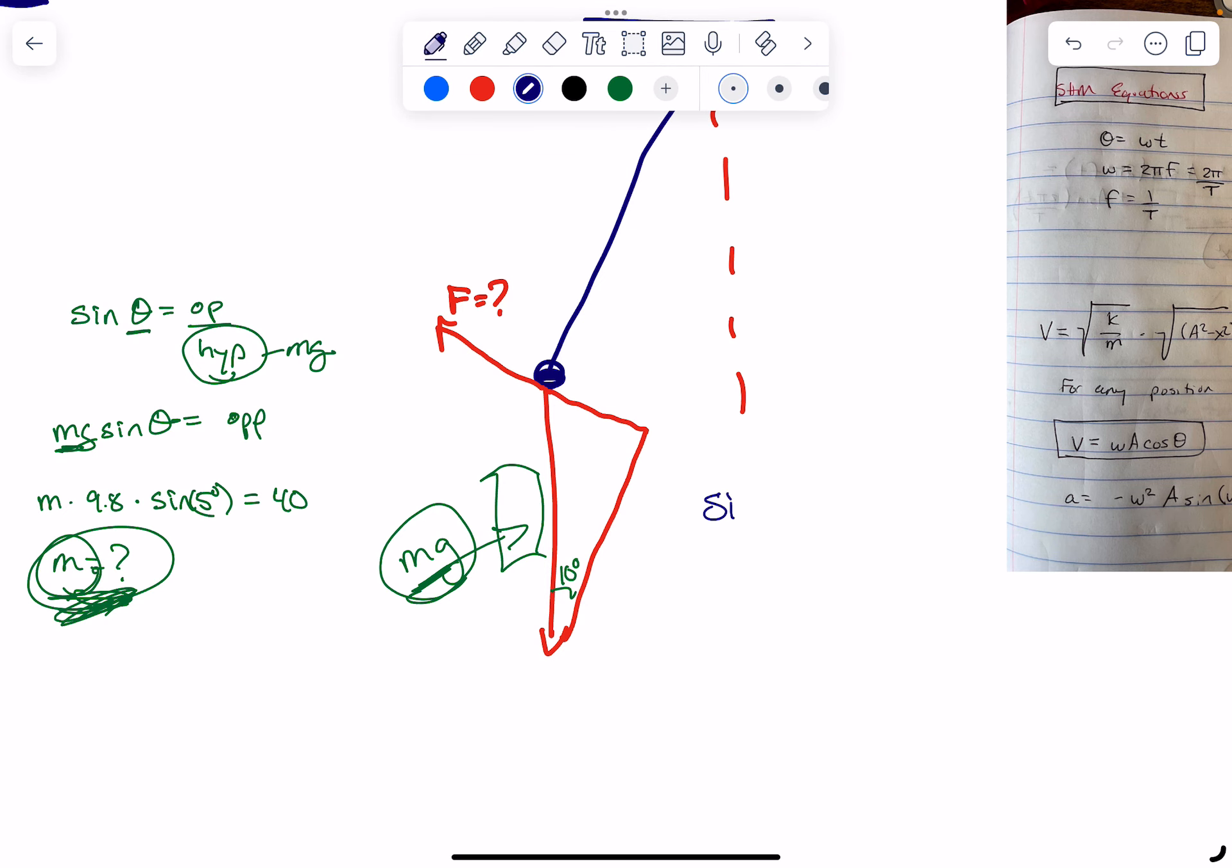You're going to say sine of now 10 degrees is equal to opposite. And you're trying to find the opposite. The opposite here, this would be the force that you're holding it. I'll say h or something. Divided by mg. And then you're trying to now solve for this. So you do some simple algebra, and you find the answer.